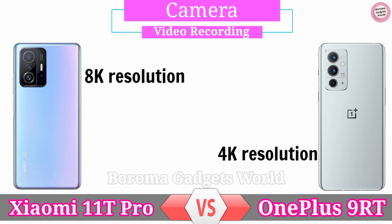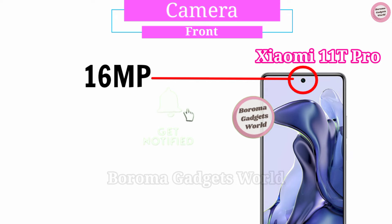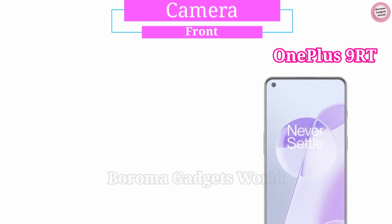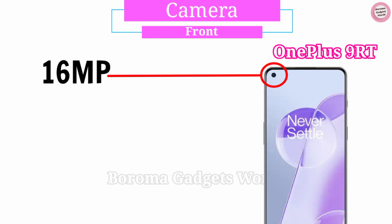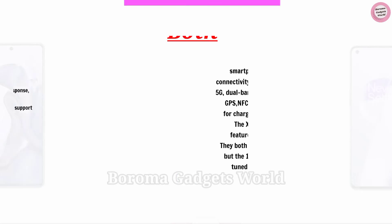For video recording, the Xiaomi 11T Pro can shoot HDR10+ videos at 8K resolution, while the OnePlus 9RT can record at a maximum of 4K. On the front, both the Xiaomi 11T Pro and OnePlus 9RT get a 16MP sensor for selfies and video calls. The Xiaomi 11T Pro features photography modes such as night mode, 100MP mode, and long exposure, while the OnePlus 9RT offers macro mode, night mode, scene enhancement, focus tracking, dual view, long exposure, ultra-res, and time-lapse.